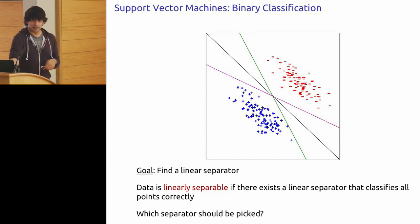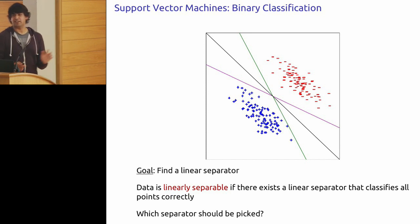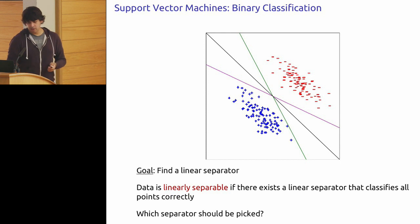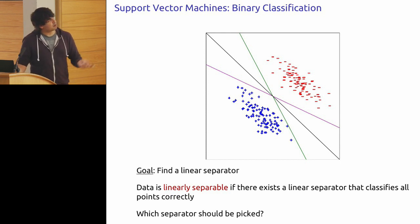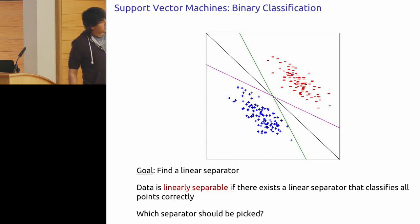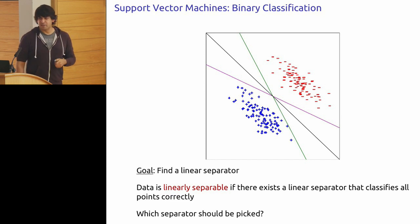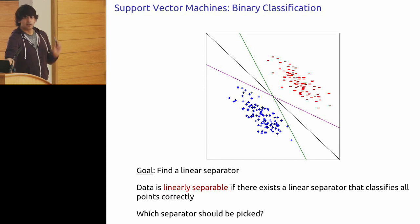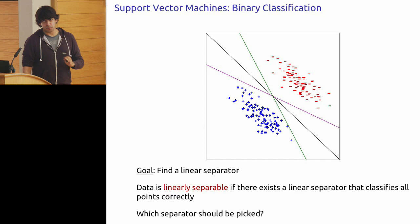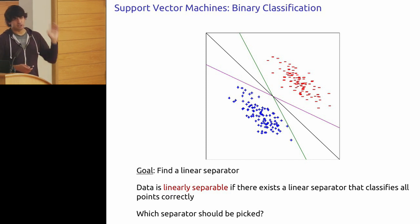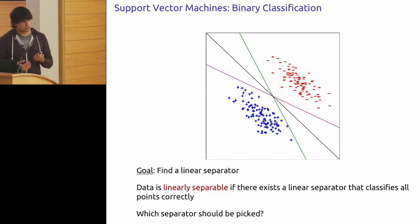If we just apply the empirical risk minimization principle, it doesn't really tell us — all of these separators have zero risk on the data we see, so all are equally good. Nonetheless, none of us would pick the green one that's too close to one of the blue points. This is what we want to discuss next — the whole theory of support vector machines. Vapnik, the same Vapnik behind the VC dimension who introduced the statistical learning theory framework, was also very influential in developing the theory around support vector machines and kernel machines.